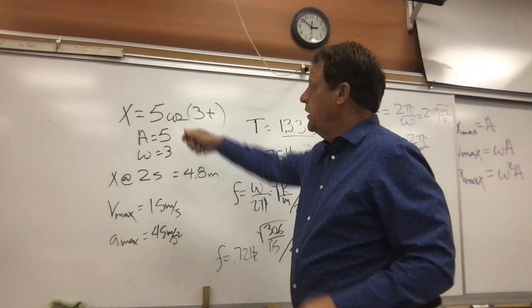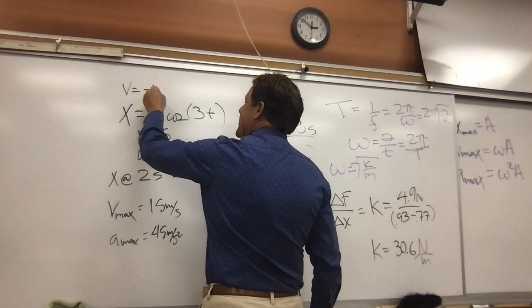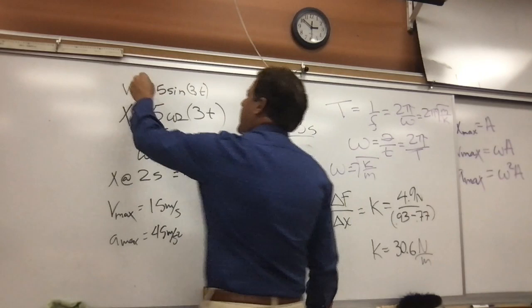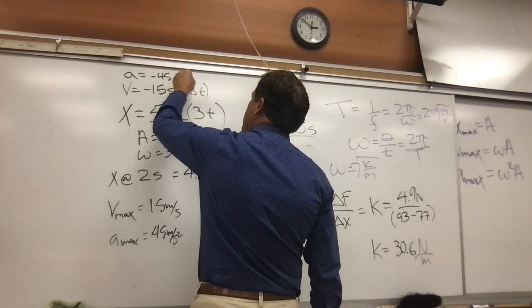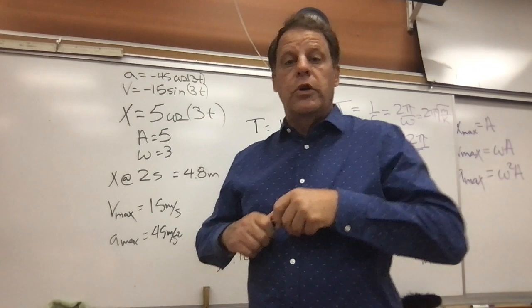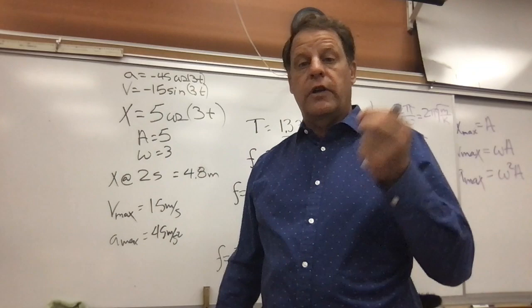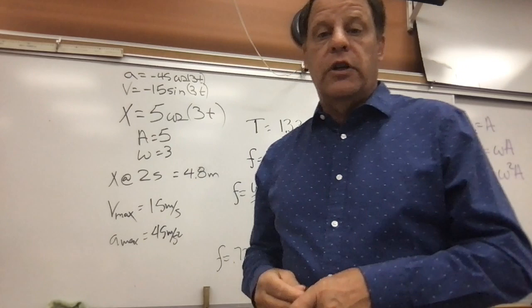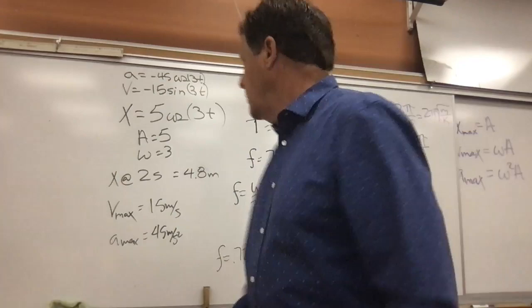We could also plug in our full equations: our velocity equation would be negative 15 sine of 3t, and our acceleration would be negative 45 cosine of 3t. Remember, as soon as we know omega and A, we can figure out these whole equations and plug in any time to find position at that particular time.